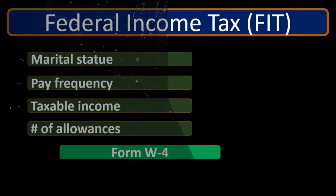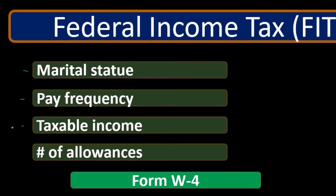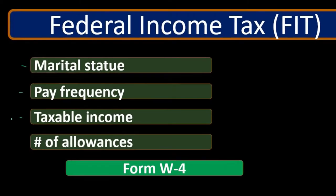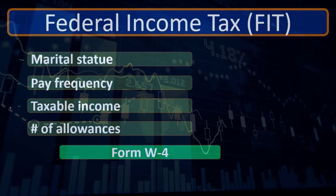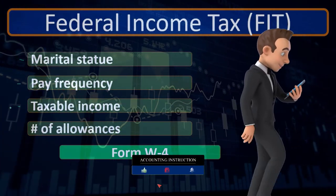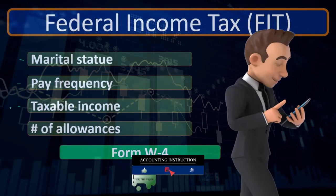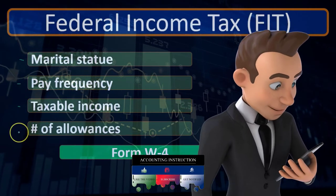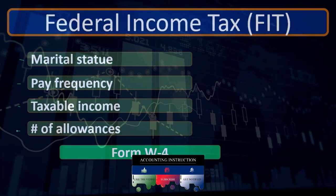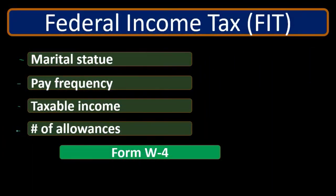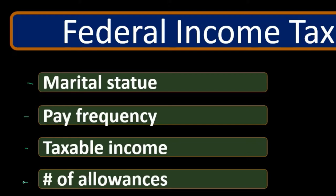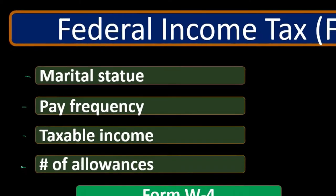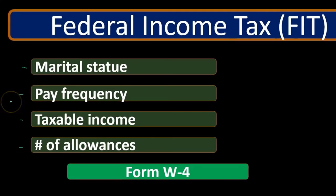Then there's taxable income — we need to know how much the employee earned for this particular pay period, which is an indication of what the total tax will be, since we have a progressive tax rate. The more income you make, the higher tax bracket your latest dollars will be in. The number of allowances ties loosely to the number of exemptions on the 1040 — like ourselves, our spouse, and our dependents. The allowances may not line up perfectly to that number, but they're kind of based on it to estimate withholdings. These items come from the employee's W-4 form.